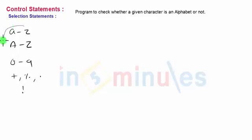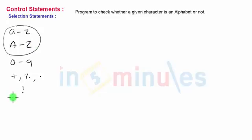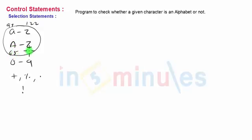If the input character is any of a to z lowercase or capital A to Z, we print 'it's an alphabet'. Every character has an ASCII code — lowercase 'a' is 97 and 'z' is 122; uppercase 'A' is 65 and 'Z' is 90. So if the input character is between 65–90 or 97–122, it's an alphabet.